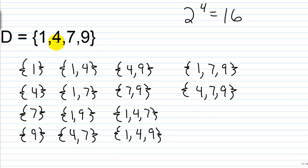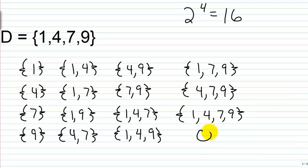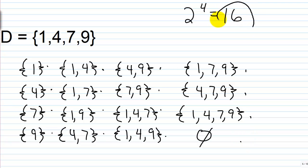Then we have a subset equal to the original set — {1, 4, 7, 9} — since two equal sets are subsets of each other. And the null or empty set is defined as a subset of every set. Counting them all up: 1, 2, 3, 4, 5, 6, 7, 8, 9, 10, 11, 12, 13, 14, 15, 16 — exactly what the formula told us.